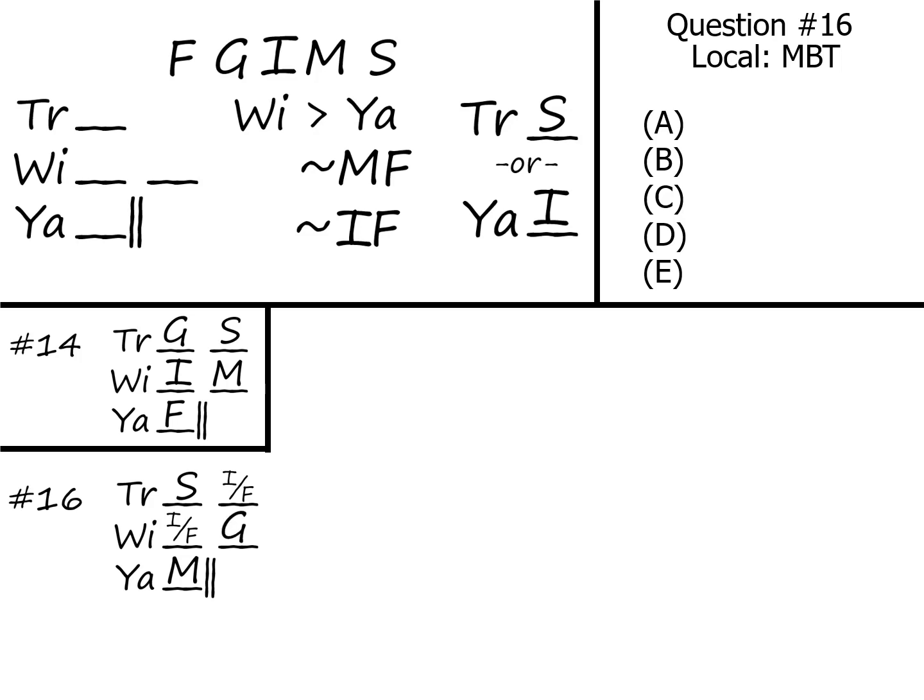With our sketch in order, we're going to go to the answer choices, looking for something that must be true, and when we find what must be true, we're going to pick it and move on. Answer choice A says that the Trents own F, which could be true, but doesn't have to be. Answer choice B says that the Trents own I, which in the same way could be true, but doesn't have to be true.